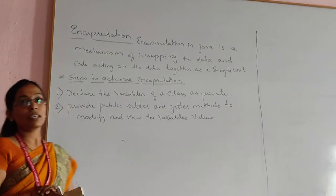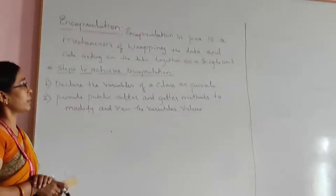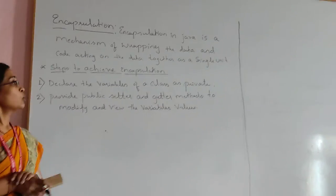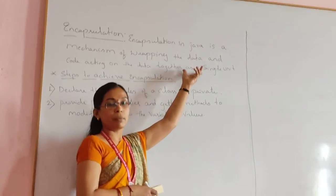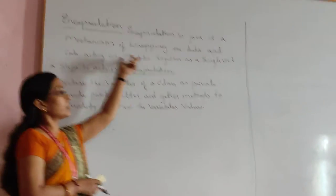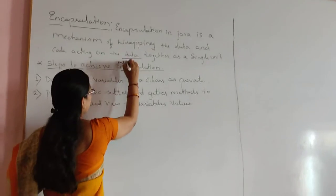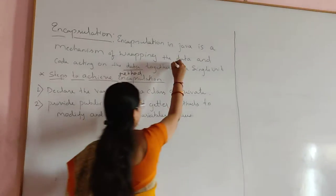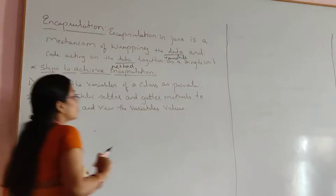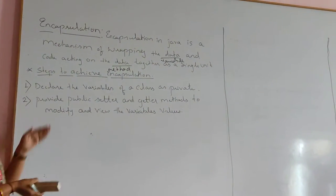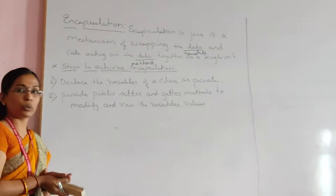Encapsulation in Java is a mechanism of wrapping of data and code acting on the data together. Wrapping of data means data is nothing but a variable, and code acting on the data is nothing but a method. So encapsulation is nothing but the binding of a variable and a method in a single unit.